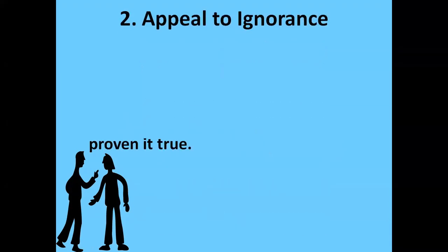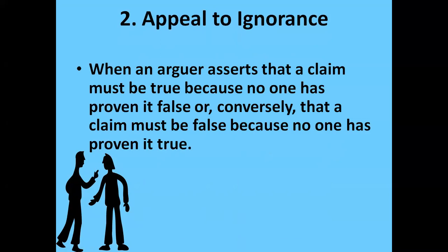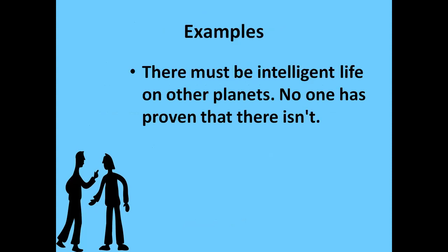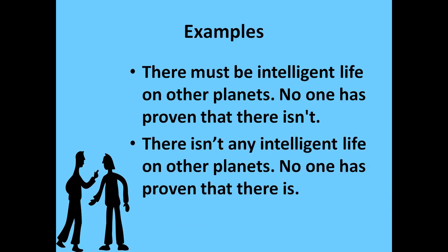The first one is appeal to ignorance. This occurs when an arguer asserts that a claim must be true because no one has proven it false, or conversely that a claim must be false because no one has proven it true. For example: 'There must be intelligent life on other planets — no one has proven that there isn't.' Or: 'There isn't intelligent life on other planets — no one has proven that there is.' Each example suffers from the same flaw: it assumes that the lack of evidence for or against a claim is good reason to believe the claim is true or false.